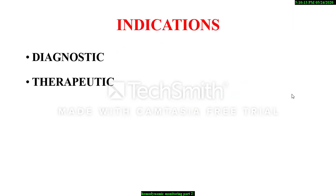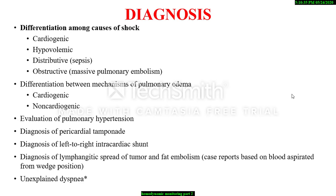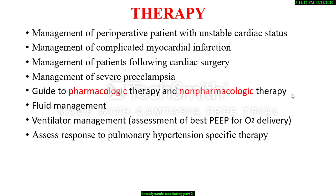The indications for the pulmonary artery catheter are divided into diagnostic and therapeutic indications. It is indicated for differentiating cardiogenic, hypovolemic, distributive or obstructive shock. It is also used for differentiating between cardiogenic and non-cardiogenic pulmonary edema, for evaluation of pulmonary hypertension, for diagnosis of pericardial tamponade and left to right intracardiac shunt. It is also used for the management of the perioperative patient with unstable cardiac status, for complicated myocardial infarction, for patients following cardiac surgery, and for patients with severe preeclampsia. It is also used to guide pharmacological and non-pharmacological therapy for fluid management in patients with burn, renal failure, sepsis, and heart failure.